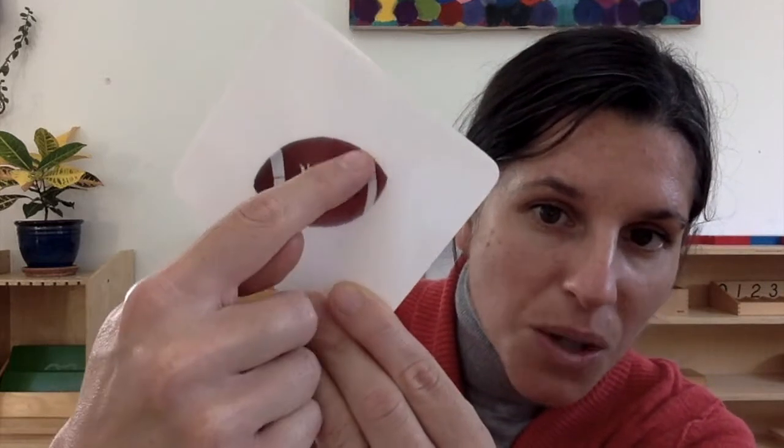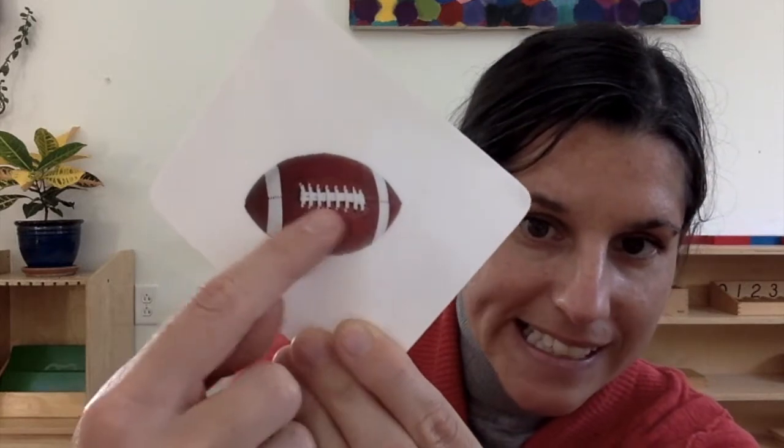Do you know what kind of ball that is? That's a football. A football is in the shape of an ellipsoid and it has white lines around it. We call these laces. You hold a football like this and you throw it like that. Can you pretend to throw a football? I caught it! I caught your football. Football.